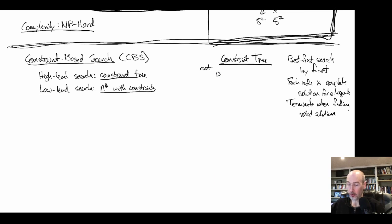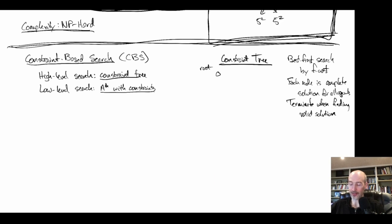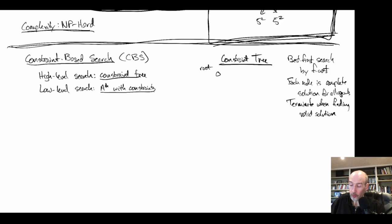We check if the root solution is valid. The f cost is the sum of individual agent costs — there are different cost functions like sum-of-costs (total distance or time summed over all agents) or makespan (time from first agent starting to last agent finishing). We use sum-of-costs here. If the root solution is valid, it's the best node by f cost and we're done.